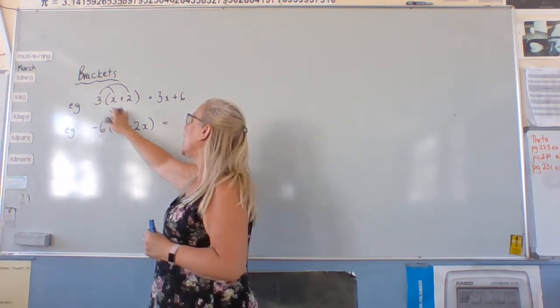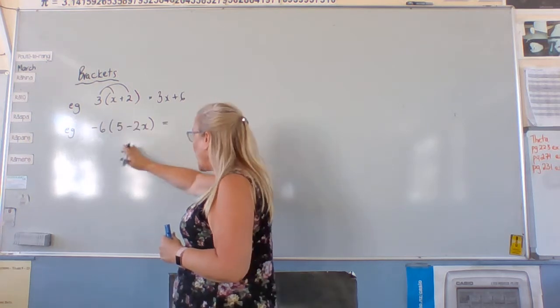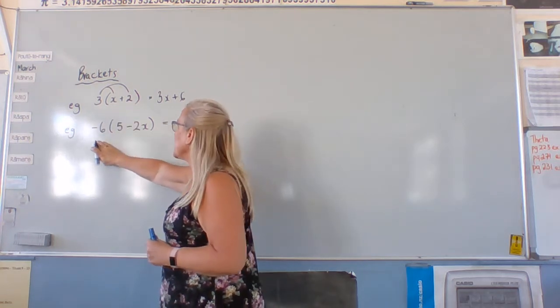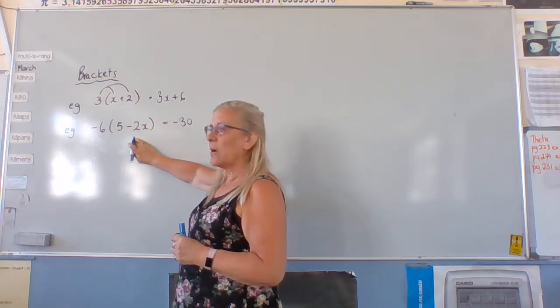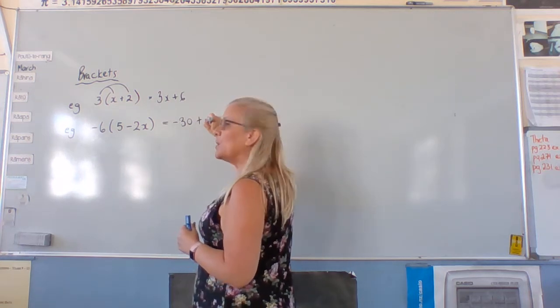So, you get negative six times five is negative thirty. And negative six times negative two x. Right? Is positive twelve x.